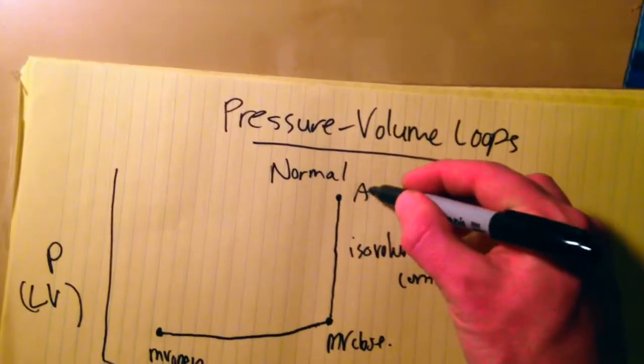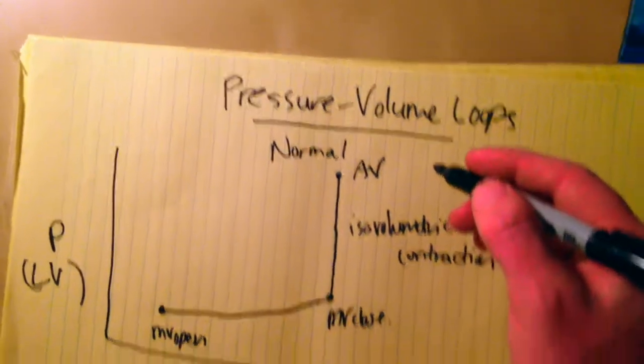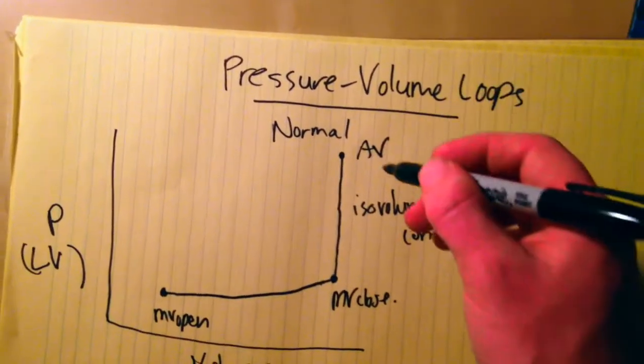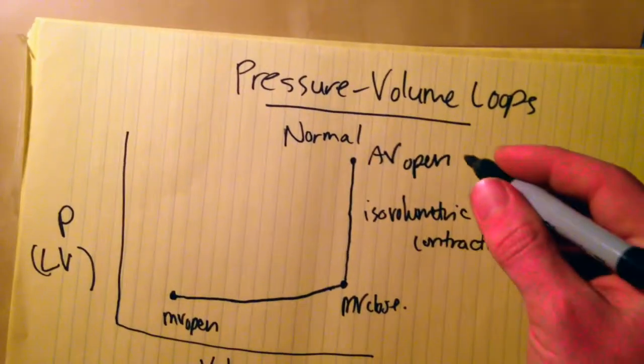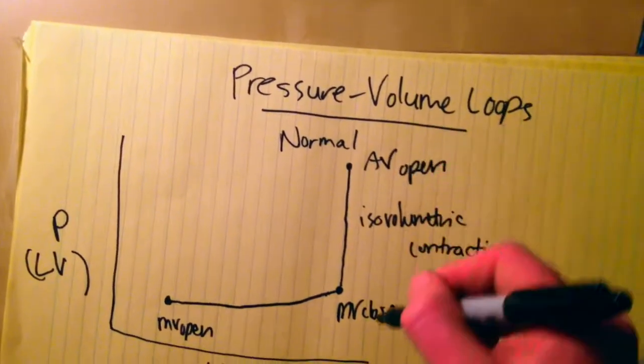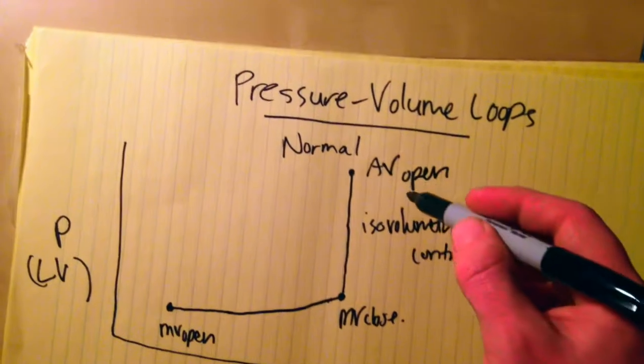To the point where the pressure in the left ventricle is now greater than the pressure in the aorta, so the aortic valve will open. Now with the aortic valve open and the mitral valve closed, you're going to get a decrease in volume.